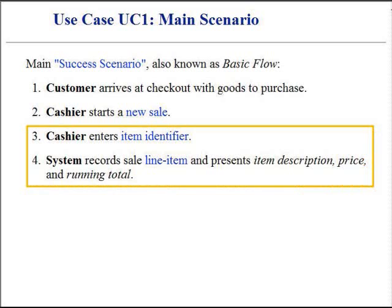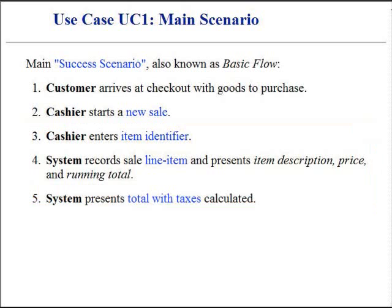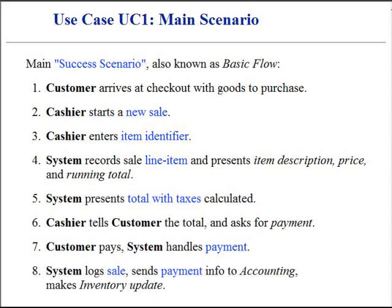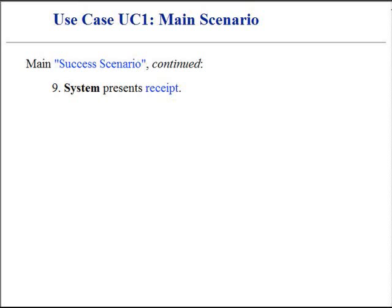Cashier repeats steps 3 to 4 until the system indicates that it is done. System presents the total with taxes calculated. Cashier tells the customer the total and asks for payment. Customer pays, and the system handles the payment. System logs the completed sale, then sends sale and payment information to the external accounting system for accounting and commissions, and to the inventory system to update the inventory. System presents the receipt. The customer gets the receipt and leaves the store with purchased goods.